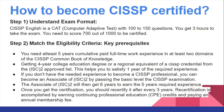Step 2 – Match the Eligibility Criteria, i.e. Key Pre-Requisites. You need at least 5 years of cumulative paid full-time work experience in at least 2 domains of CISSP Common Body of Knowledge. Getting a 4-year college education degree or a regional equivalent from the ISC² Approved List can satisfy 1 year of required experience. If you don't have the needed experience, you can become an Associate of ISC² by passing the basic level CISSP examination. The Associate will then get 6 years to earn the 5 years of required experience. Once you get the certification, you should renew it every 3 years.